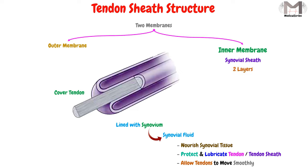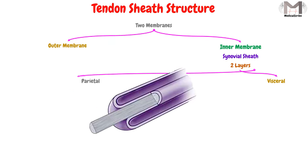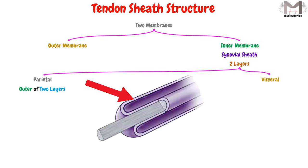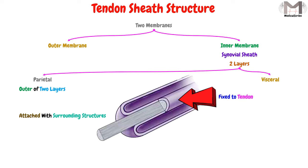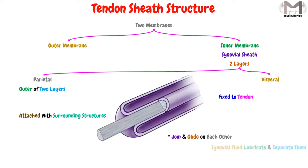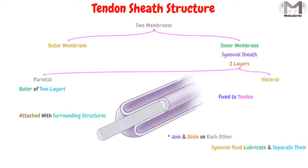It is important to know that the tendon sheath is also composed of two layers: one is the parietal layer and the other is called the visceral layer. The parietal layer is the outer of the two layers and is attached to the surrounding structures, while the visceral layer is fixed to the tendon. The parietal and visceral layers join and glide on each other because of the synovial fluid that lubricates and separates them.